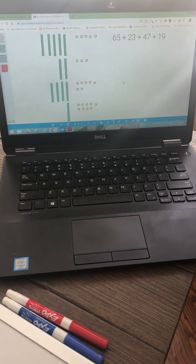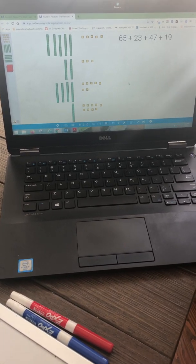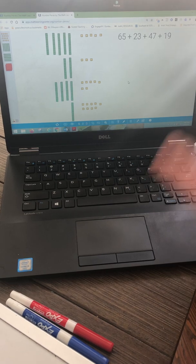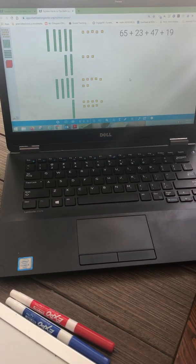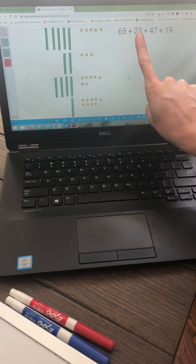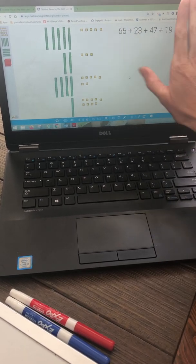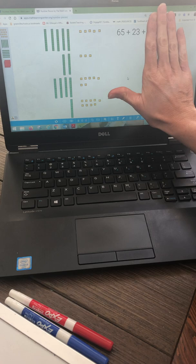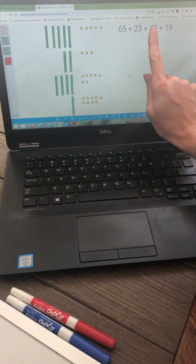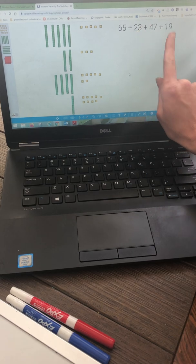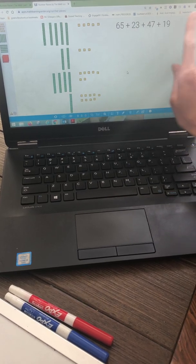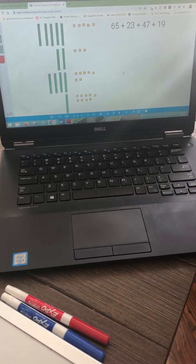We've been working on adding numbers within a thousand where we had to regroup sometimes and sometimes we did not have to regroup. Today we're going to work on adding more than two addends. We've only been adding two addends, but now we're going to start adding three or four addends. Remember the numbers that we add together are called addends and we're trying to find our sum, our answer in addition.